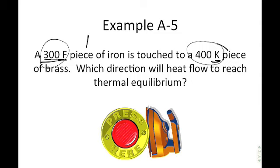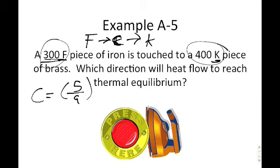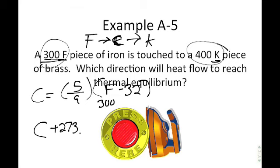To convert, first go from Fahrenheit to Celsius, then from Celsius to Kelvin. The formula is Celsius = (5/9) × (F − 32). Plugging in 300°F: subtract 32, multiply by 5/9, to get the temperature in Celsius. Then add 273 to convert to Kelvin. The final answer in Kelvin is approximately 422 K.